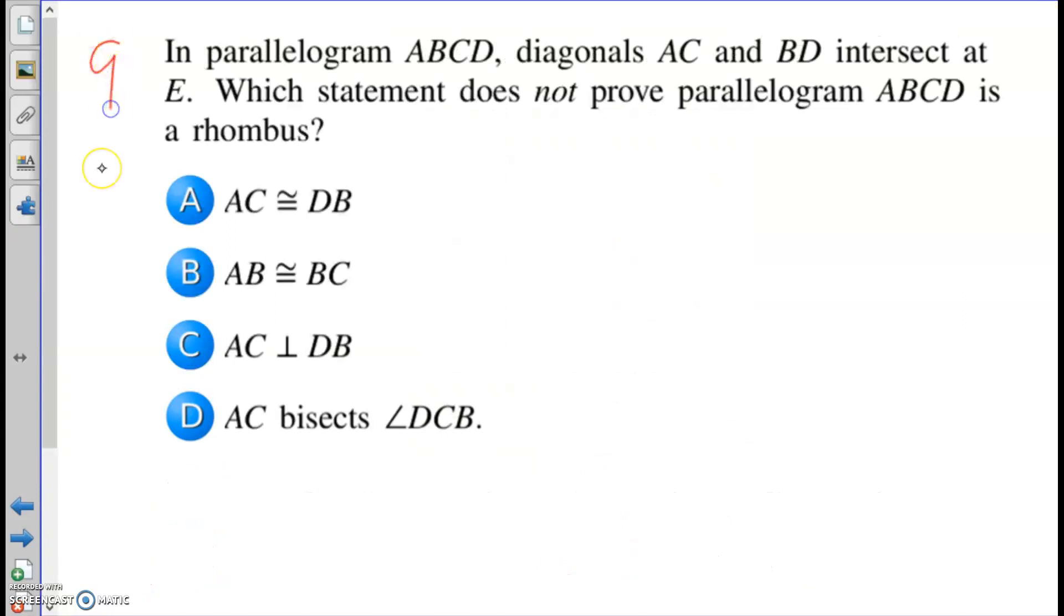Number 9. In parallelogram ABCD diagonals AC and BD intersect at E. Which statement does not prove a parallelogram is a rhombus? You know, it's probably a good idea to draw the picture. I'm going to kind of draw it like a rhombus since they're talking about rhombus, but A, B, C, D, and what we're talking about here is E.